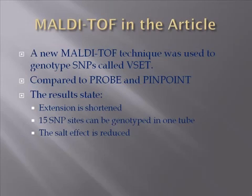The results show they had shorter extensions. If you have long extensions, you might misgenotype a heterozygous for a homozygous, which can cause problems. You can also genotype more than one site in a single tube. In a single run, you can test 15 different sites, which cuts down the cost and time it takes to genotype. Lastly, they reduced the salt effect, which is a big concern because that also reduced the cost.